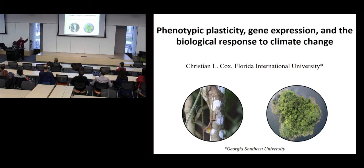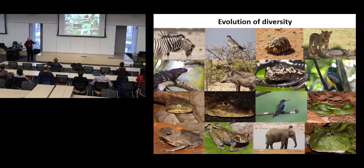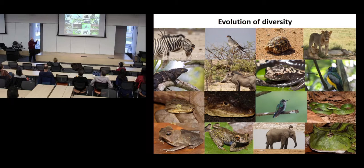Today I'm going to talk about our work thinking about how organisms respond to a changing environment. But before I get started on that, I wanted to tell you a little bit about what my lab does. I'm really broadly interested in the evolution of diversity, because phenotypic diversity and functional diversity represent the raw material acted upon by natural selection, and to the extent that this diversity is underlaid by genetic diversity, it represents the potential for adaptation.